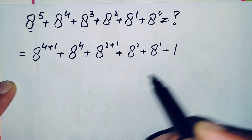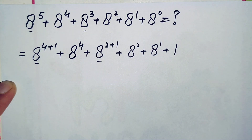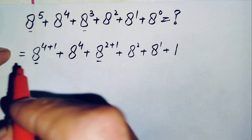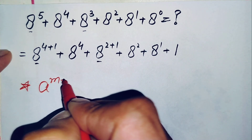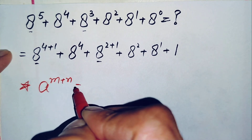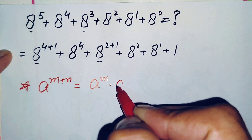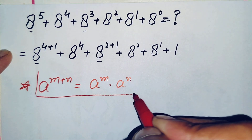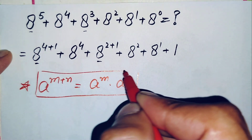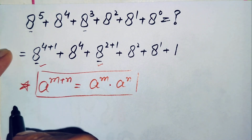In these two terms we will use an exponential math property. The property states that x to the power (m+n) can also be written as x to the power m times x to the power n. Using this exponential property, this equation will become the following.